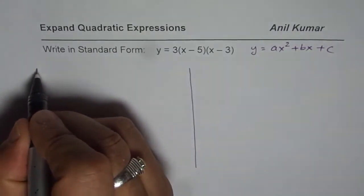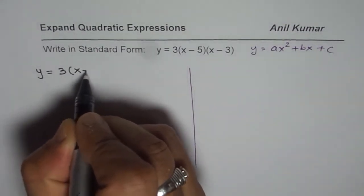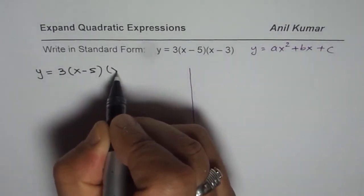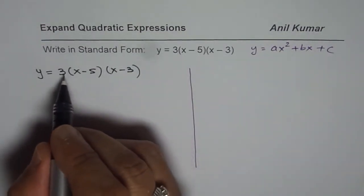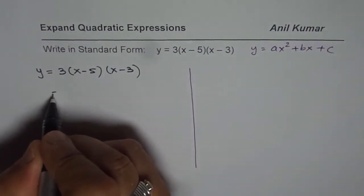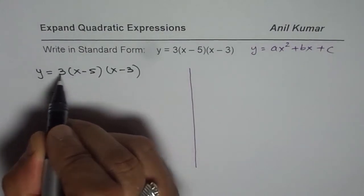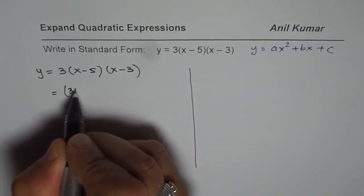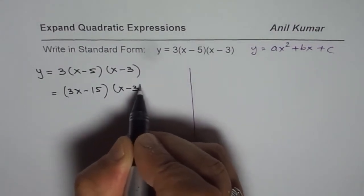So let us begin by copying it. So we have this question as 3 times x minus 5 times x minus 3. Now what you can do is you can multiply the first term by 3 and then apply the distributed property. So we will follow this method for the first time. So we will multiply x minus 5, both these, by 3. So we get 3x minus 15 times x minus 3.